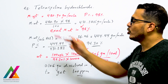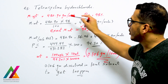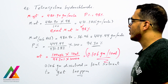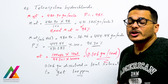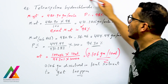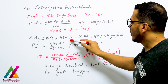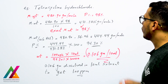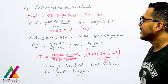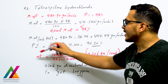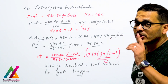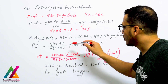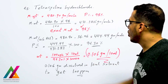Molecular weight at 98% purity = 480.9 × 98% / 100 = 471.282 g/mol. Then calculate the molecular weight for tetracycline only, without hydrochloride: 480.9 − 36.46 (for HCl) = 444.44 g/mol. Then calculate the exact purity: molecular weight without HCl divided by molecular weight at 98% purity, multiplied by 100, equals 94.3%.